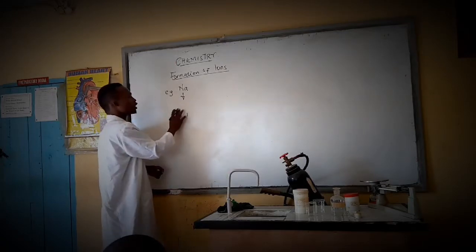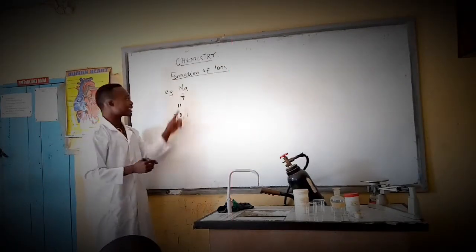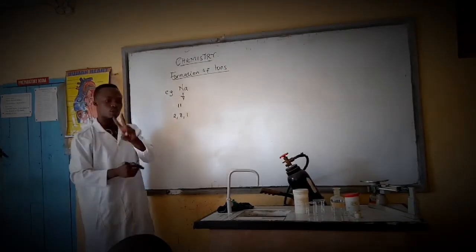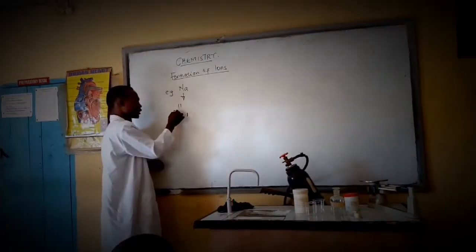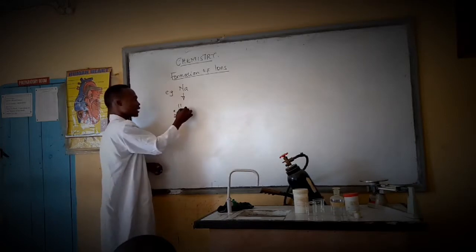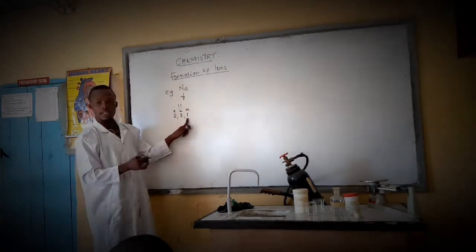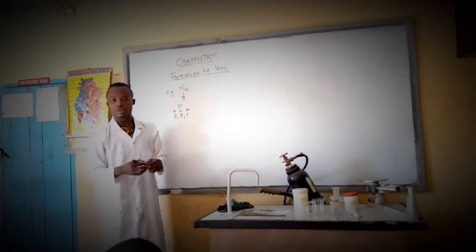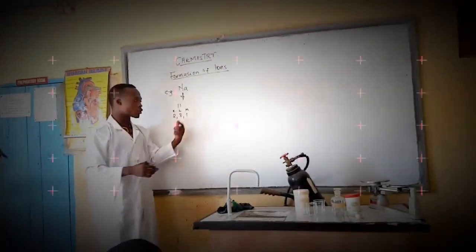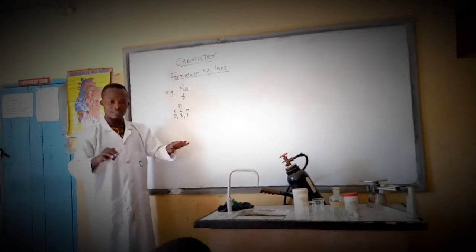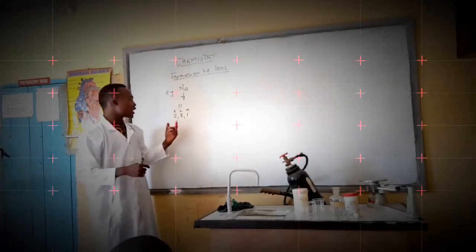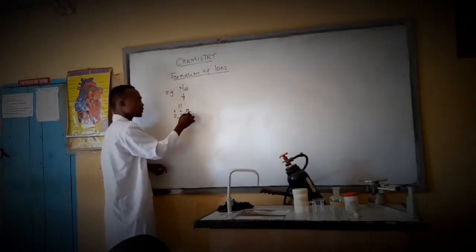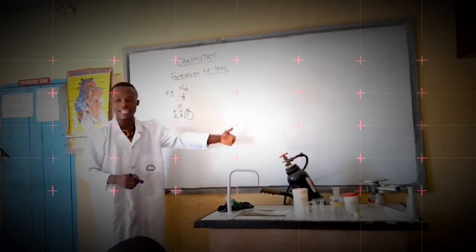Sodium has 11 electrons arranged as 2, 8, 1. It has 1 electron in the last shell. Having 1 electron in the last shell will not make sodium stable. Sodium would need 7 more electrons to fill the shell, so instead it gives out that 1 electron to the corresponding element that needs it.